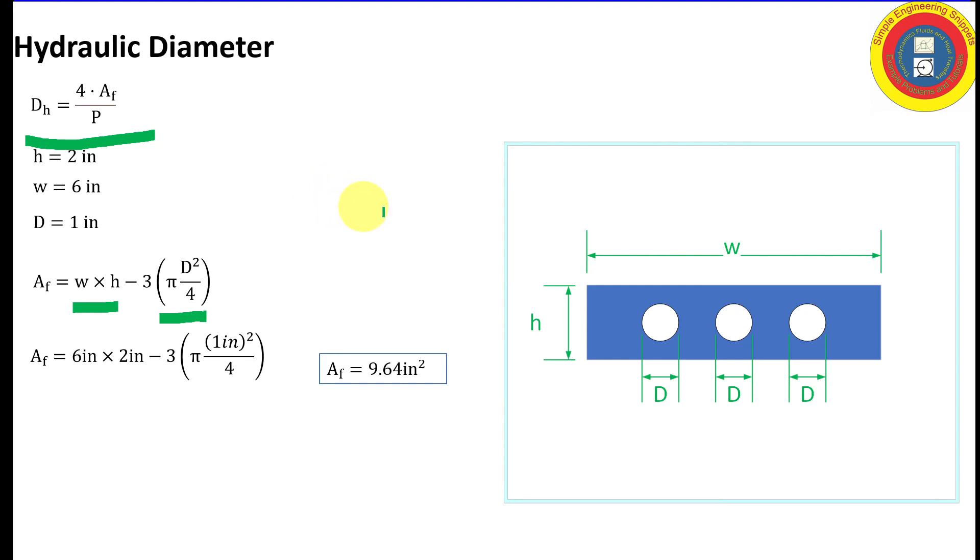Now let's work on the wetted perimeter. This is going to be similar but different in that the wetted perimeter includes the wetted perimeter of the entire rectangle plus you have to add in the wetted perimeter of each of the three tubes. So this equation gives us the wetted perimeter for the entire rectangle and then the wetted perimeter for each of the tubes is pi d. And so we add on three times pi d to get the total wetted perimeter. And that comes out to be 25.42 inches.